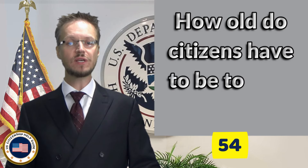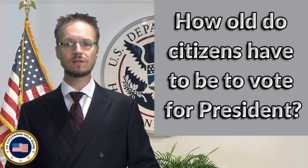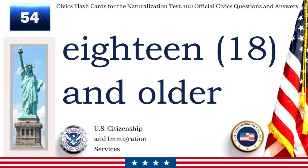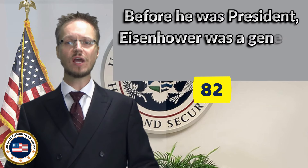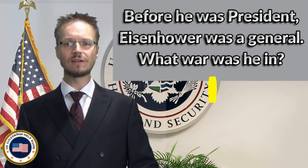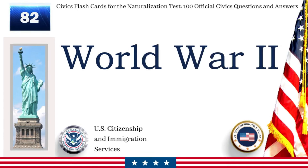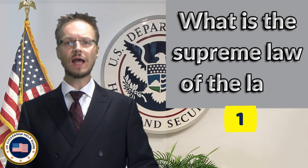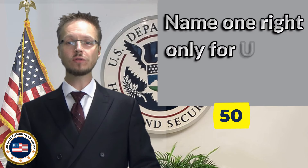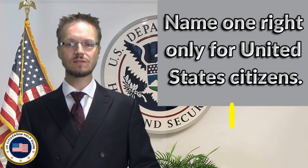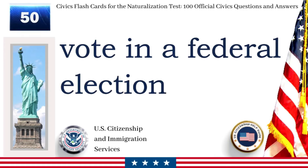How old do citizens have to be to vote for President? Eighteen and older. Before he was President, Eisenhower was a general. What war was he in? World War II. What is the supreme law of the land? The Constitution. Name one right only for United States citizens. Vote in a federal election.